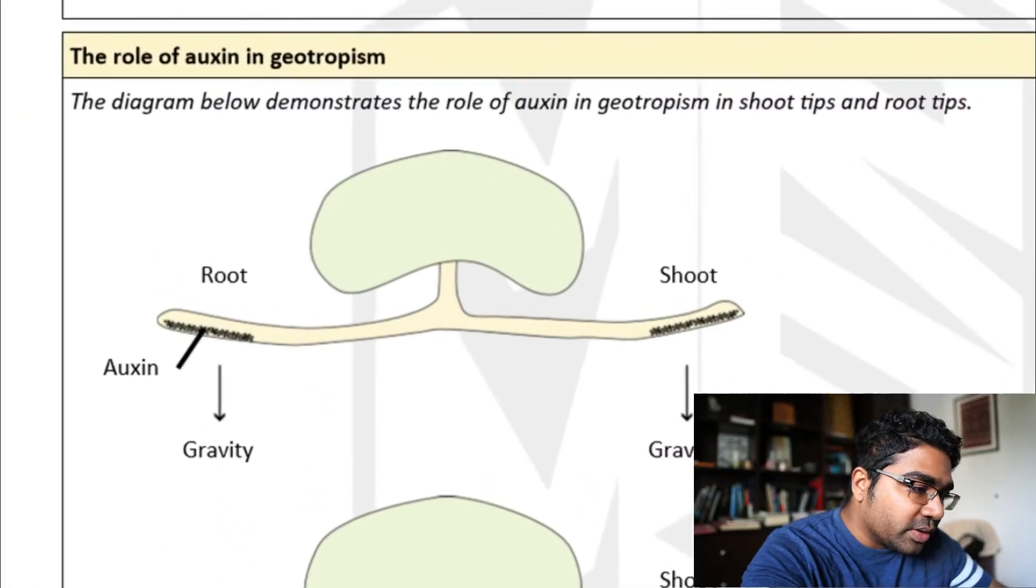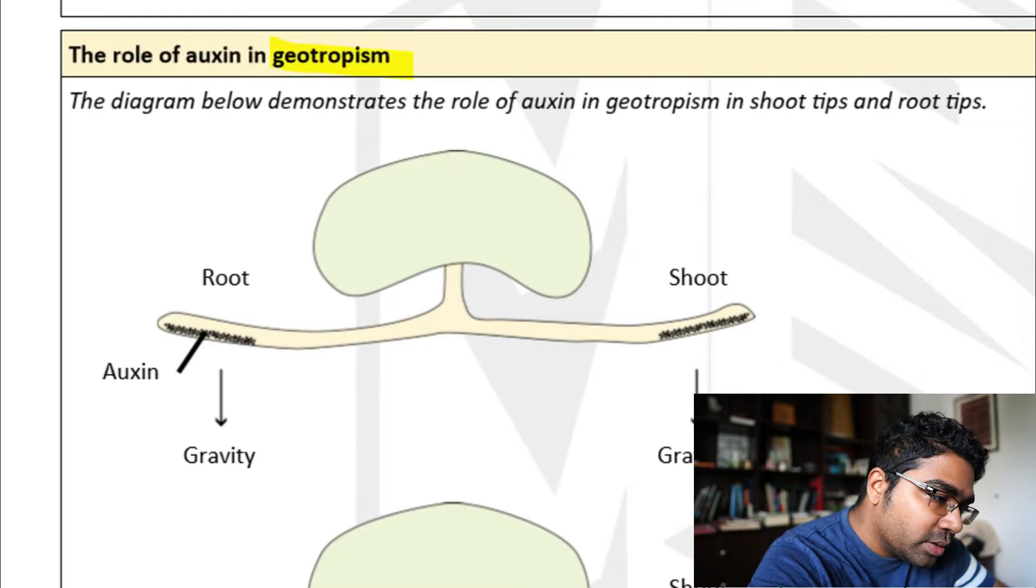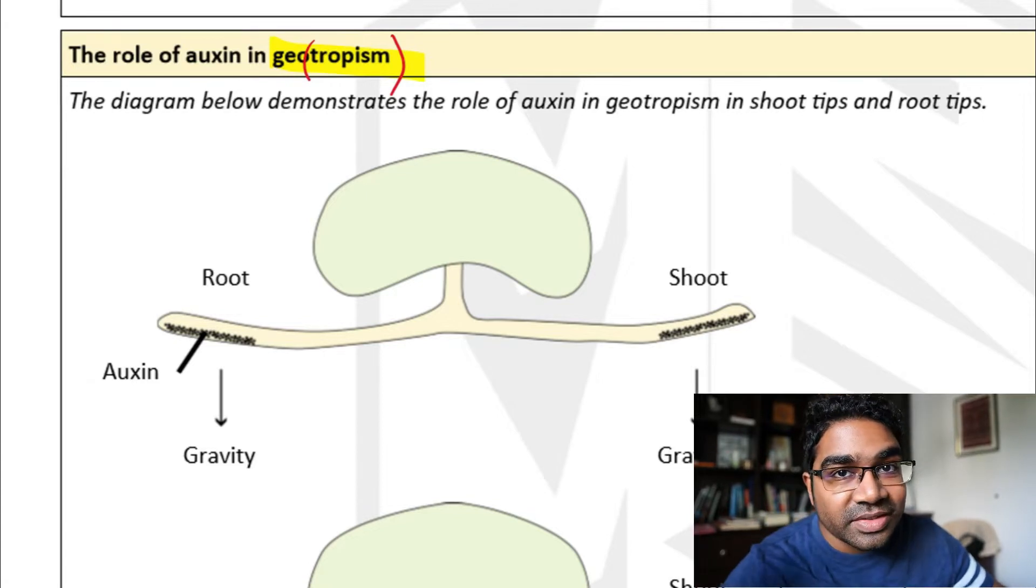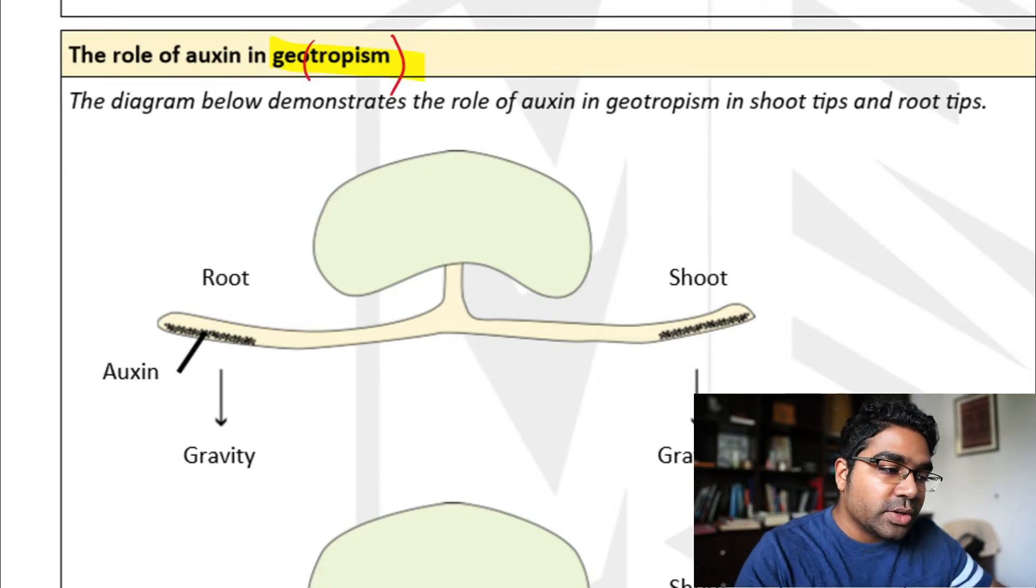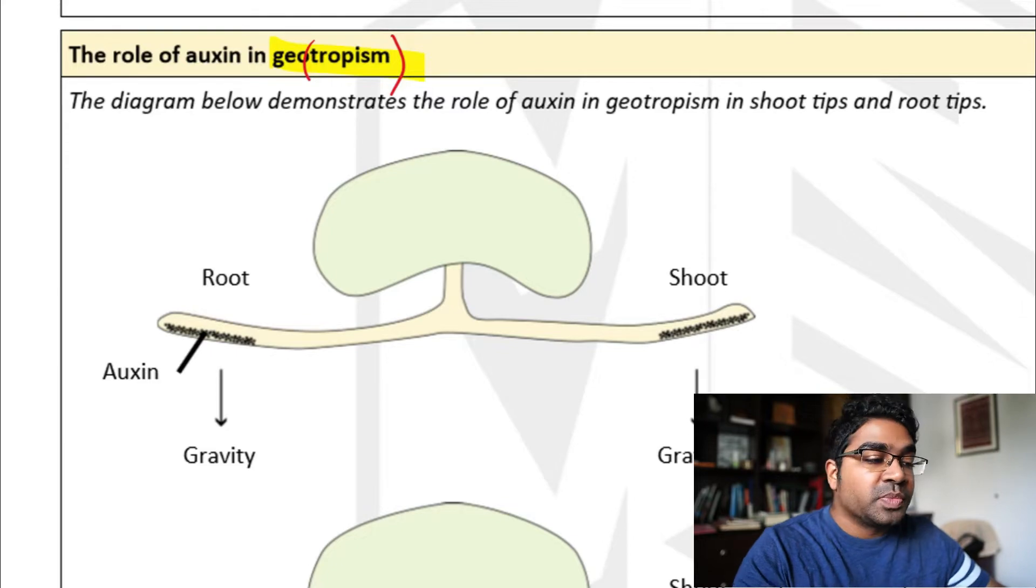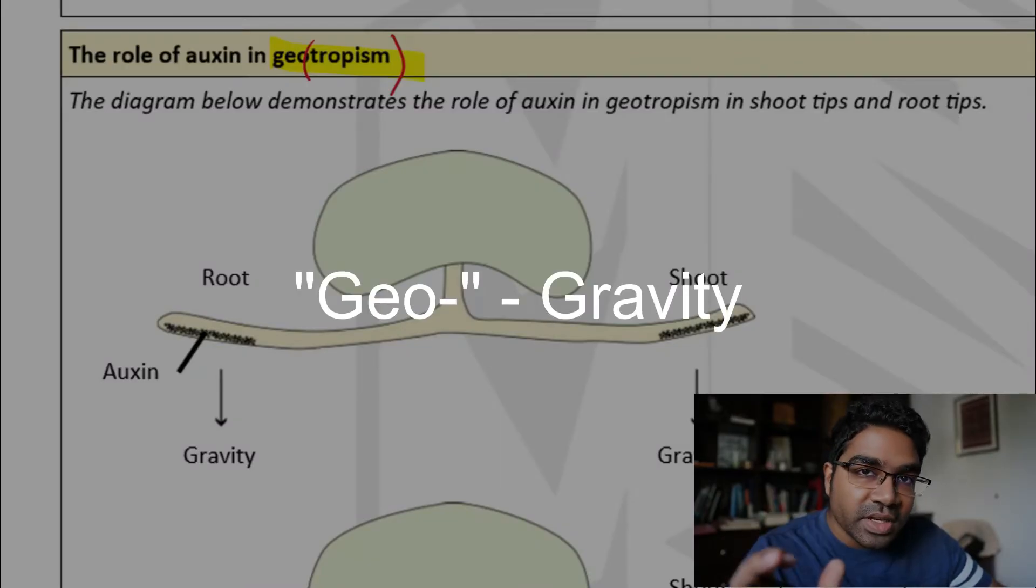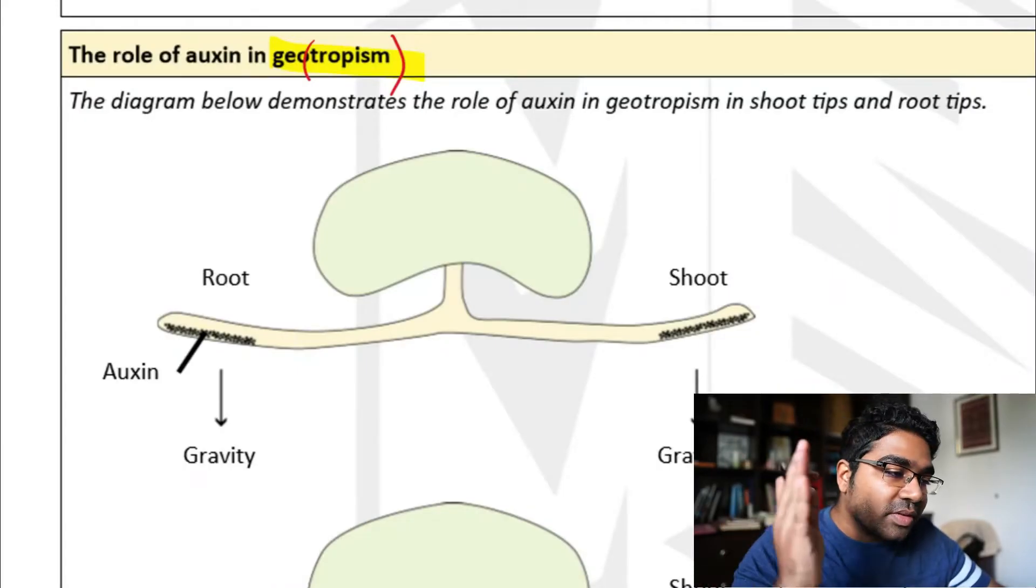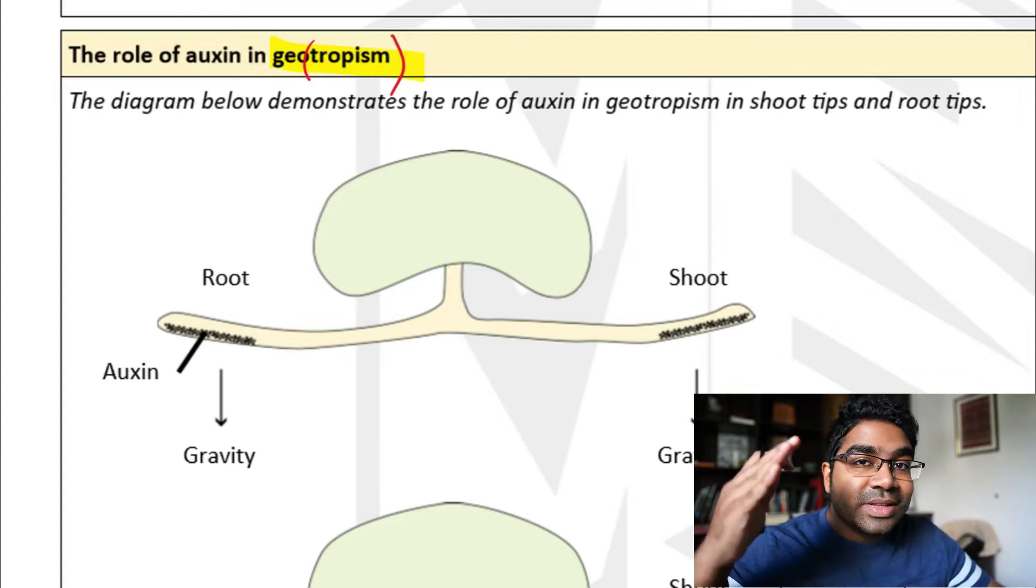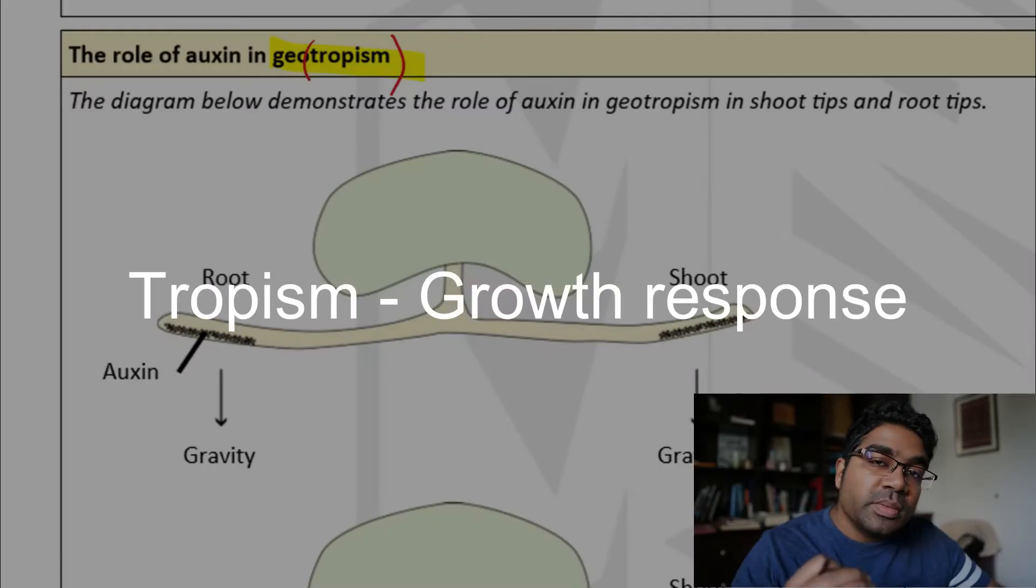In geotropism, first let's address this word. Tropism is a type of plant response to a certain stimulus. In this case, we are talking about geotropism—the 'geo' is for gravity. Geotropism is the response of the plant towards gravity, and tropism responses are growth responses.